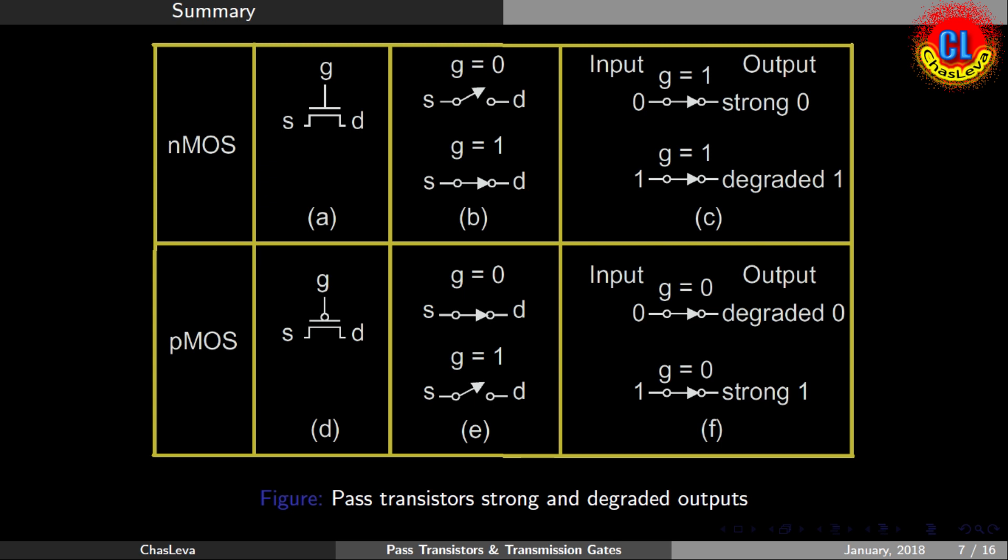A brief summary on this. For an NMOS transistor, if gate voltage is zero, there won't be any current flow between source and drain. If gate voltage is one, the input at source will pass to drain. If the source voltage is zero, we will get a proper strong zero at output. But if the source voltage is one, we won't get a proper one. It will be degraded one, that is VDD minus VTN.